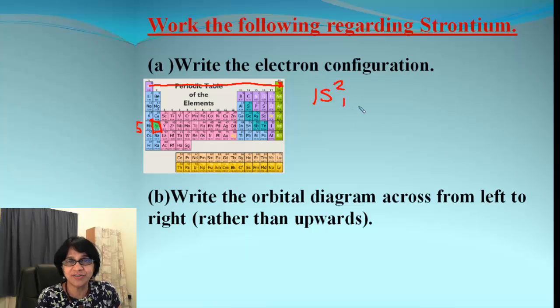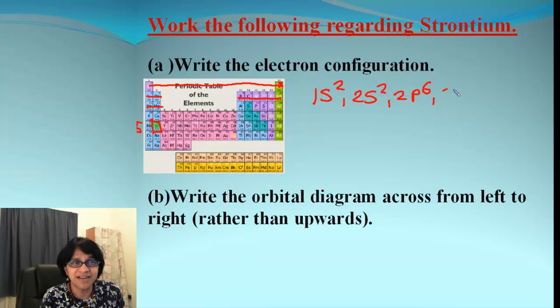So, we get 1s² 2s², 2s² completely filled in. Moving on, 2p is completely filled in, so it will have 6 electrons. Row number 3, that is our s electrons, that is 3s². Comes to p block, that is 3p, completely filled in again. 3p is 6.